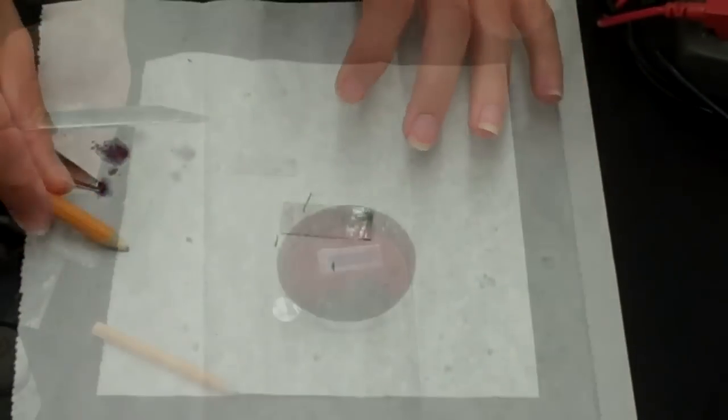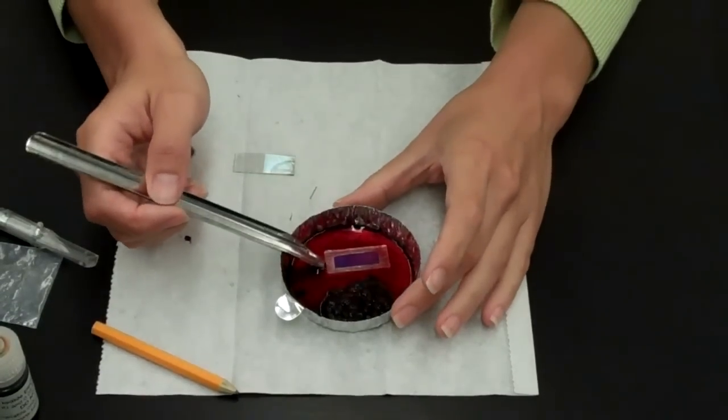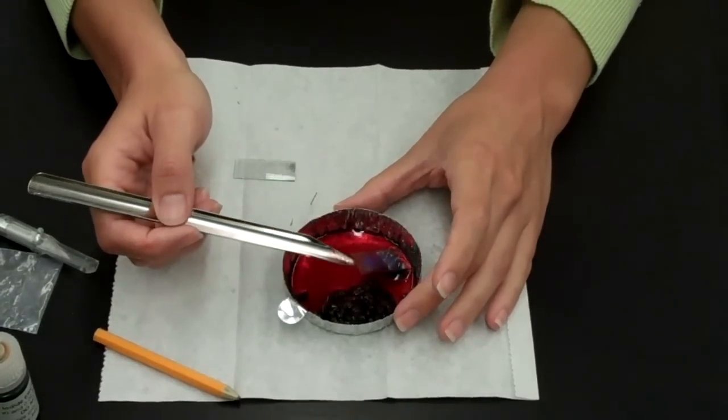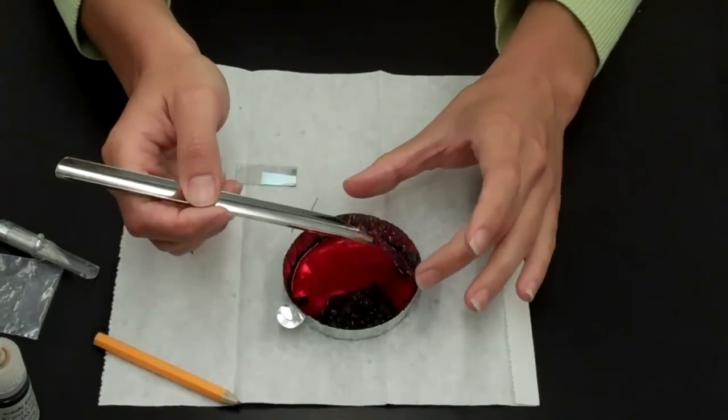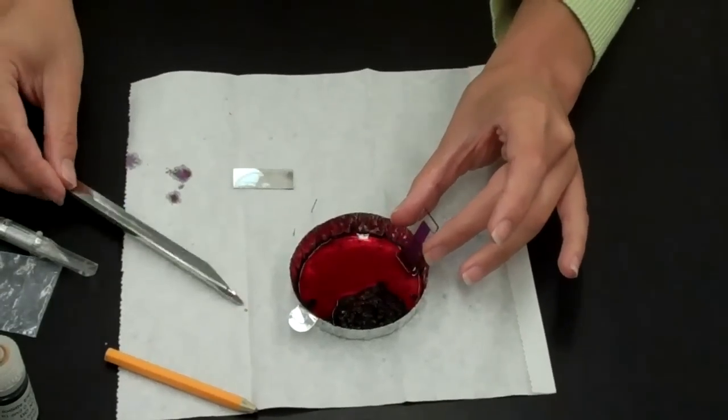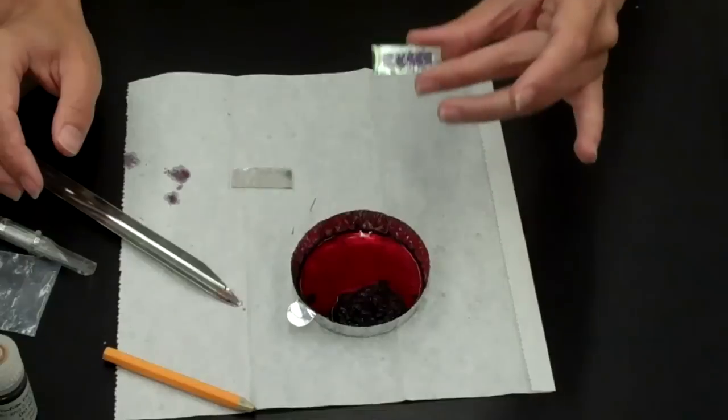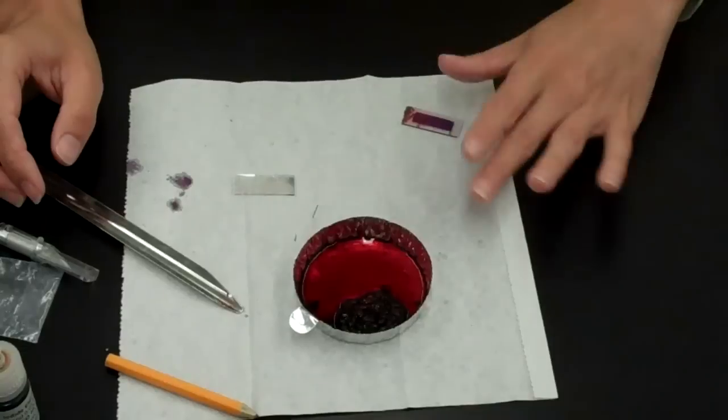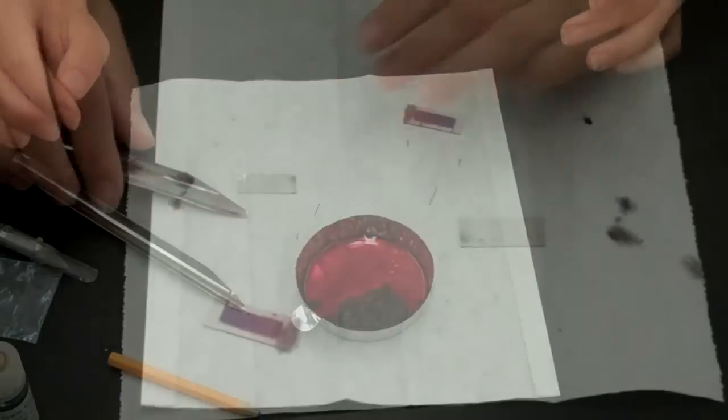Next, you will remove the titanium dioxide dyed slide. You can use the spatula, you can use your fingers, either way, you want to flip it so that it's face up, and then place it onto the paper towel.